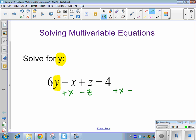Usually, it's really annoying when you guys do two steps at once, but for this, I'll kind of make an exception. So this is going to go away, this is going to go away, and we have 6y equals 4 plus x minus z.